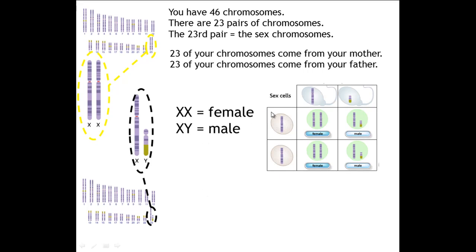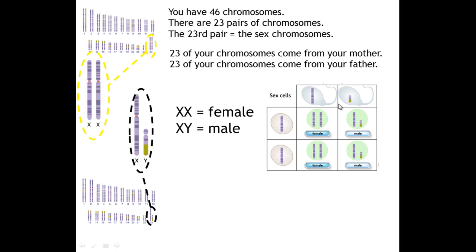This Punnett square diagram shows us the different permutations that are possible. Down here this represents the female, and along here this represents the male, obviously because these are the sperm and these are the eggs.